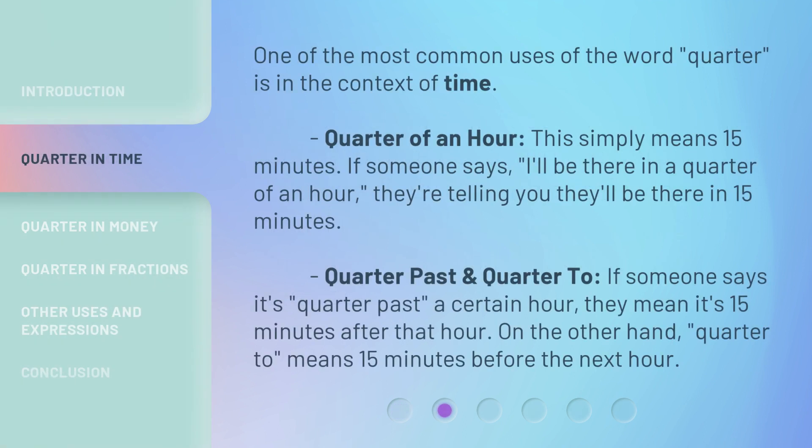One of the most common uses of the word 'quarter' is in the context of time. Quarter of an hour simply means 15 minutes. If someone says, 'I'll be there in a quarter of an hour,' they're telling you they'll be there in 15 minutes.